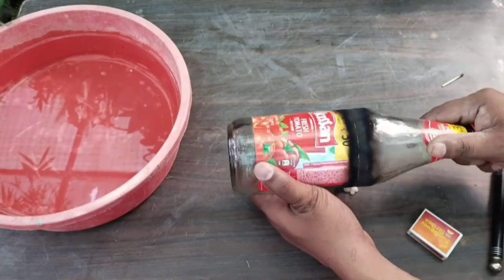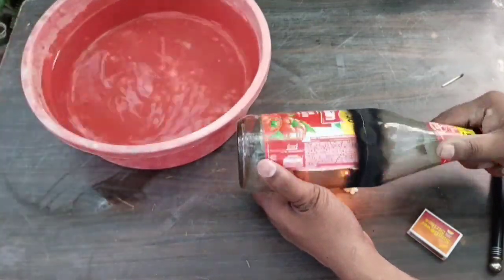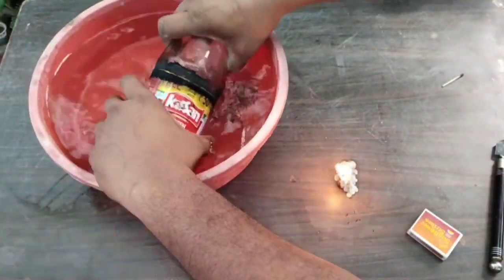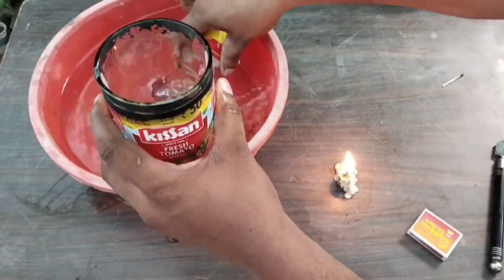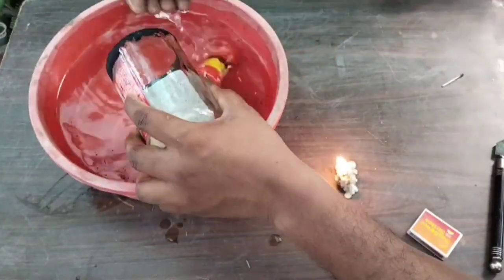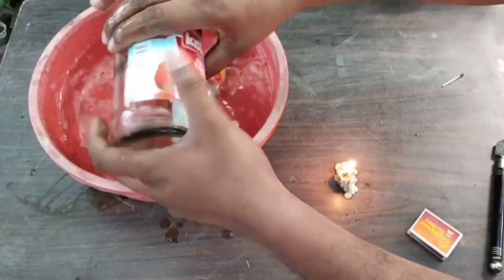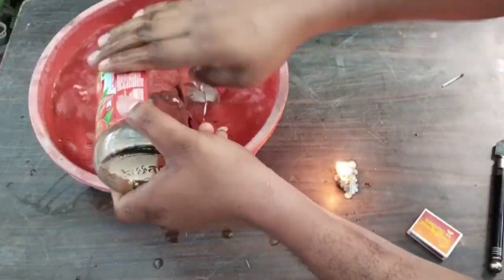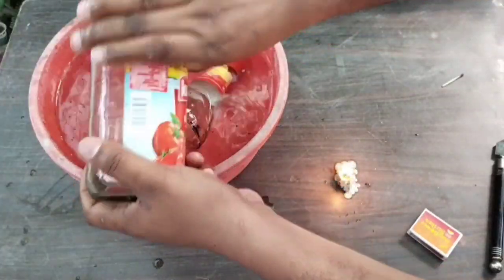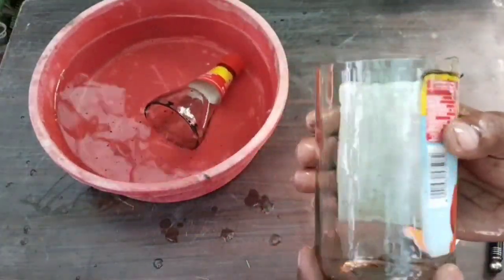When you feel that the bottle is hot enough, then we will change the temperature of the bottle using water. For this, you can also cut the bottle by moving a piece of ice over the marking.